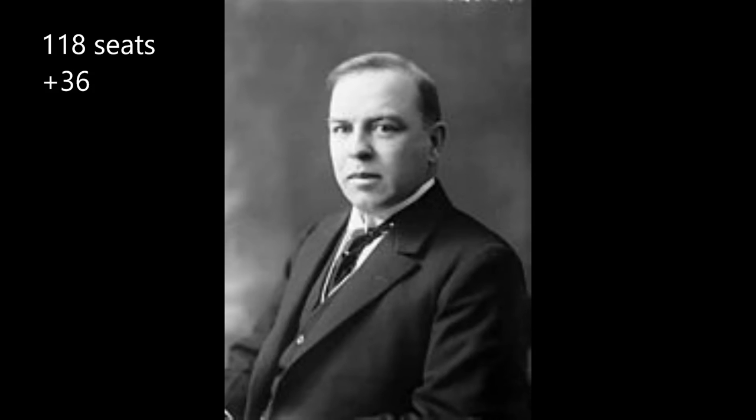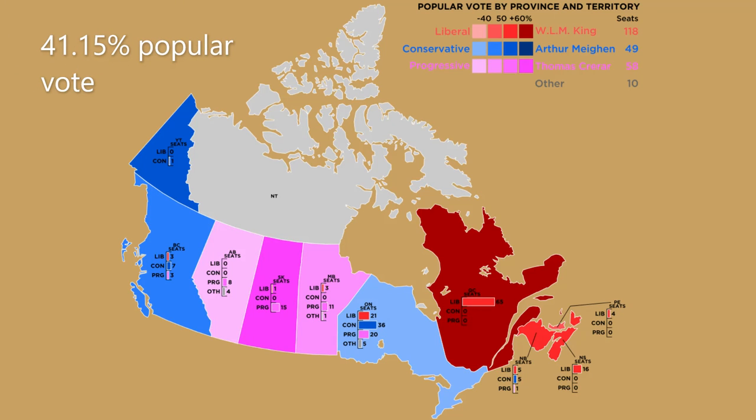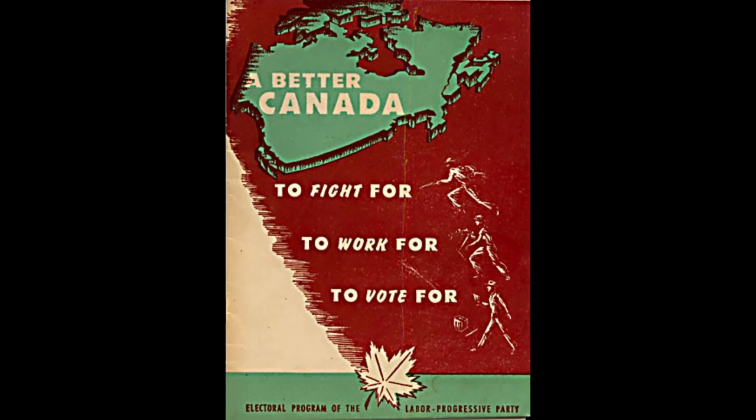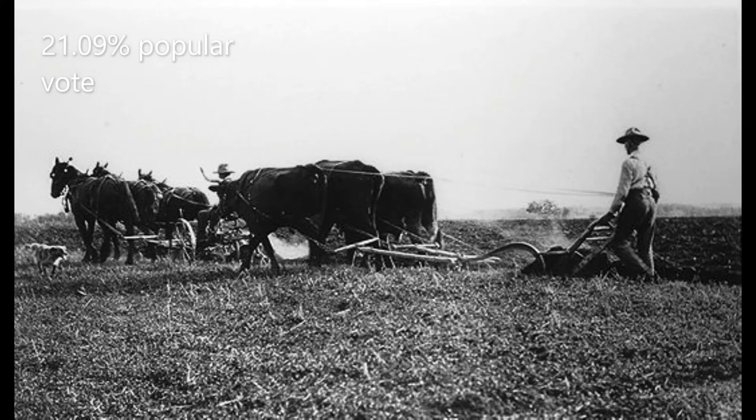And here are the results. Mackenzie King won, becoming the 10th prime minister in Canadian history. He won 118 seats, 36 more than in the previous election, and received 41.15 percent of the popular vote. King won all seats in Quebec and most seats in the Maritimes, which helped him win his majority. This was the first elected Liberal government in over 10 years. In second was the Progressive Party, which won 58 seats and received 21.09 percent of the popular vote. A candidate of theirs by the name of Agnes McPhail won the seat she was running in and became the first woman elected to federal parliament in Canadian history.